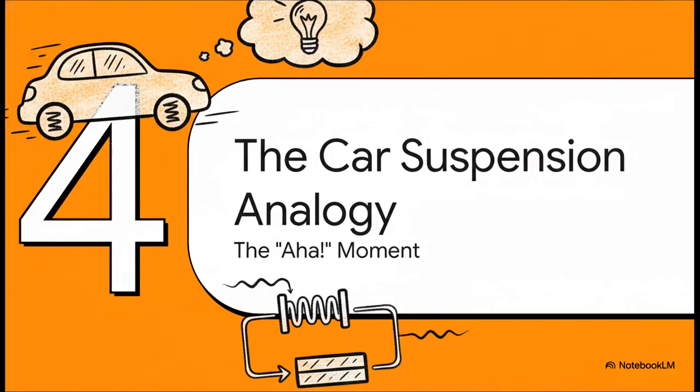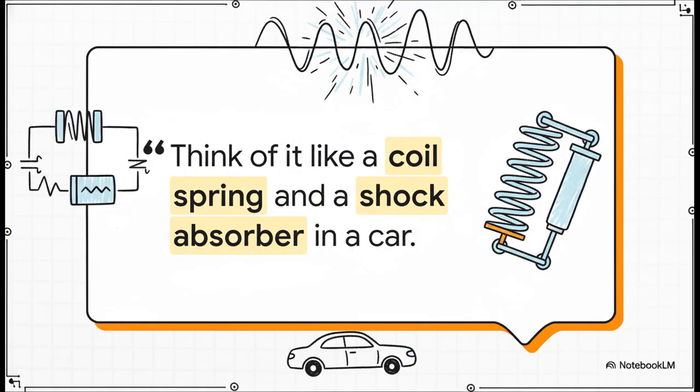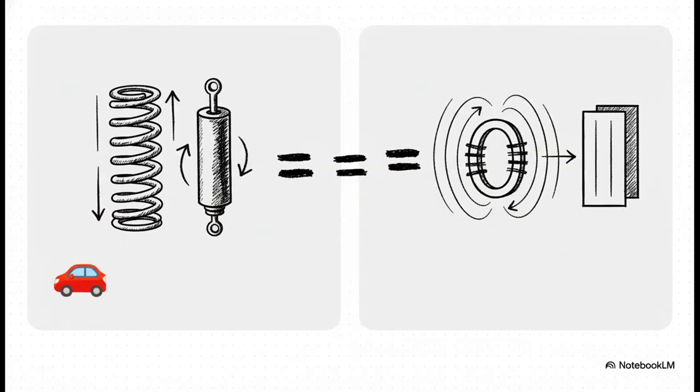This is where it all clicks into place. To really get what's going on, you don't need any complex math. All you need to do is think about your car. This really is the aha moment. This is it. This is the key to the whole thing. The relationship between an inductor and a capacitor is almost exactly the same as the relationship between the big coil spring and the shock absorber in your car's suspension. And this breaks it down perfectly.